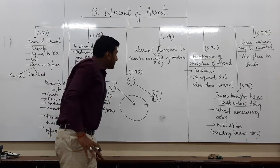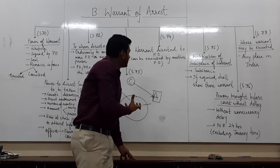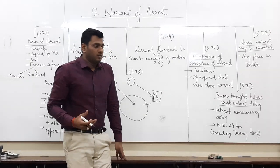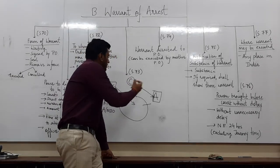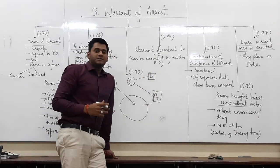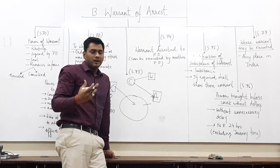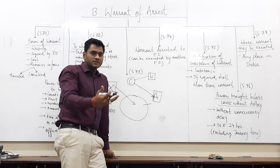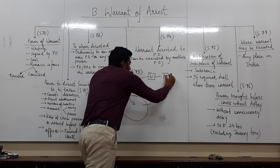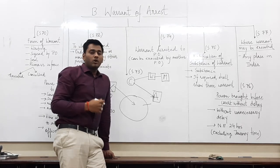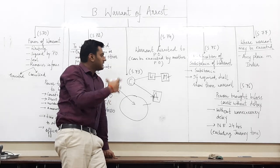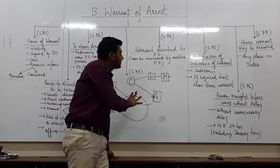Section 74 states that a warrant directed to a police officer can be executed by another police officer. Suppose a warrant has been issued directed by the court to Mr. W, and Mr. W cannot himself execute the warrant or arrest the person. He may endorse this warrant to another police officer, Mr. M. Now Mr. M can also arrest the person against whom this warrant has been issued. This is the arrangement of Section 74.